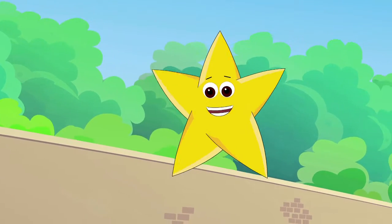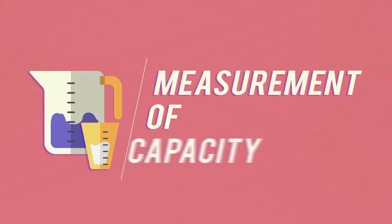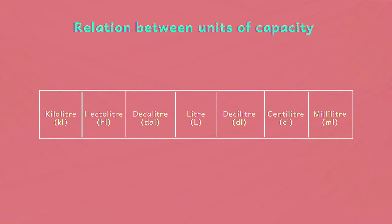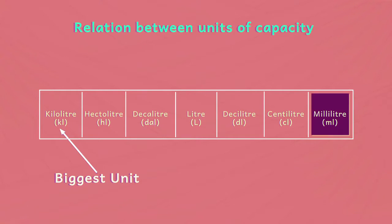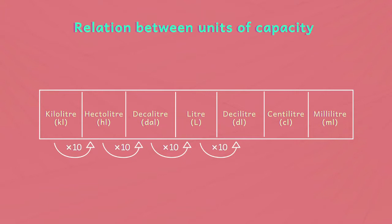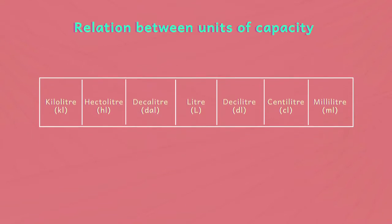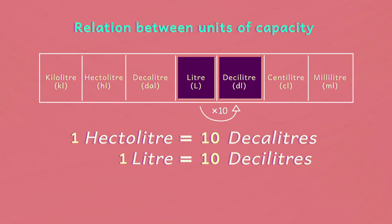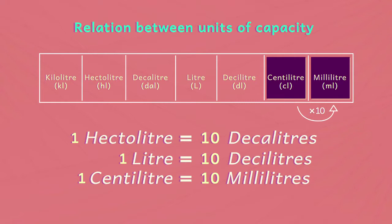Let me tell you about some more units to measure capacity. Similar to the units of measurement for length and weight, there are some other units of measurement for capacity besides kilolitre, litre and millilitre. They are hectolitre, dekalitre, decilitre and centilitre. In the given table, kilolitre is the biggest unit and millilitre is the smallest unit. The metric system is based on ten — each bigger unit is ten times the adjacent smaller unit. For example, one hectolitre equals ten decalitres, one litre equals ten decilitres, one centilitre equals ten millilitres.